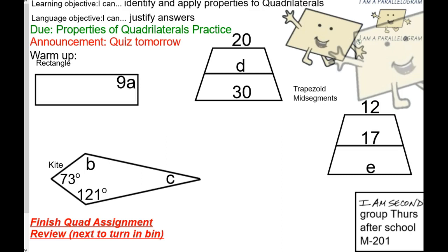So again, 9A for a rectangle, I know this has to be 90 degrees, so you need to make yourself a little equation. 9A equals 90 degrees, okay? You set up that equation, yeah? Cool.